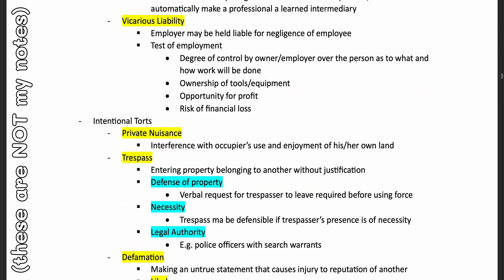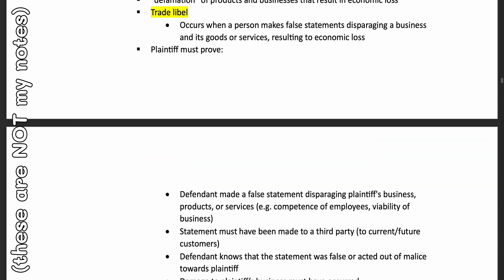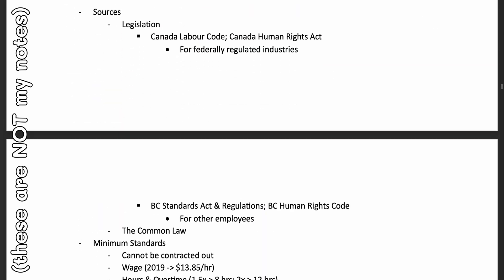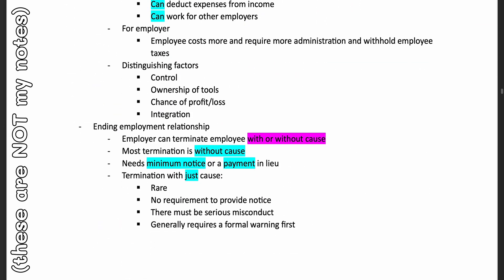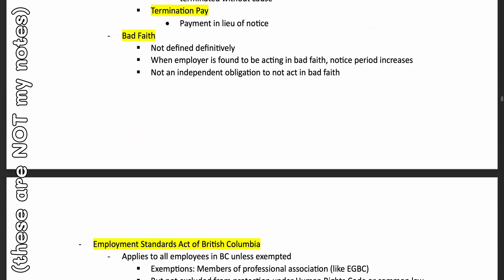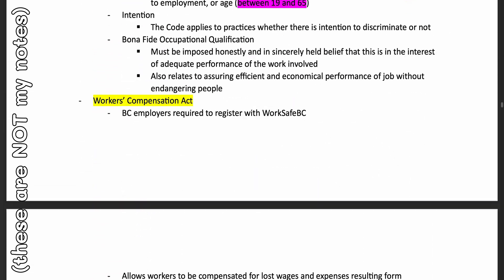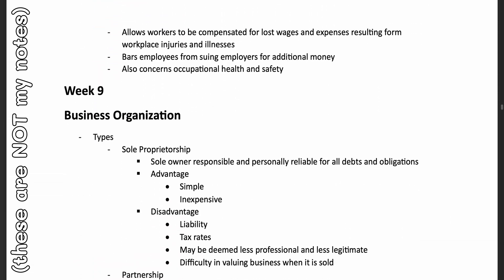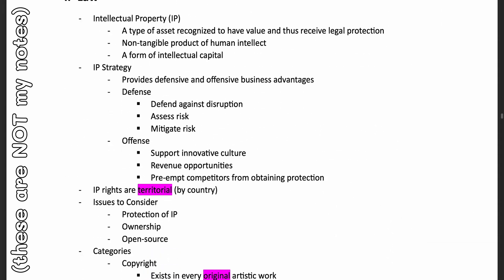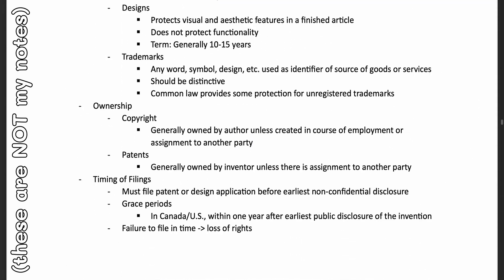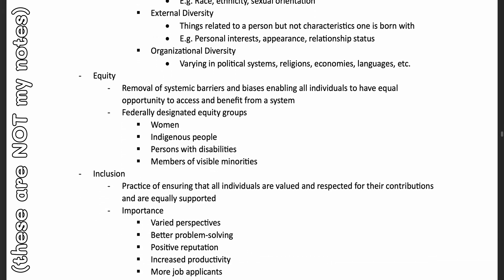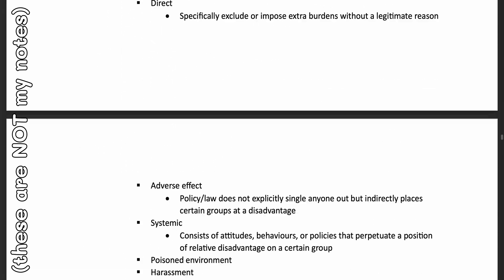You'll then move on to some business-related things in engineering, like how a business is organized, aboriginal law, and equity and diversity in the workplace. This is followed by the successes, failures, and risk of innovation in engineering, and concluded by what corruption is and what it looks like pertaining to engineering.